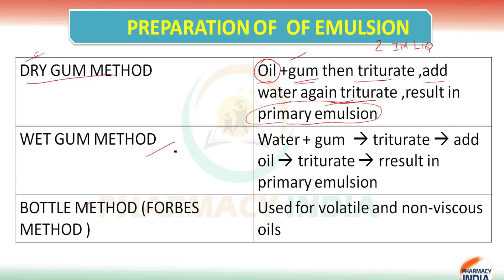The next one is the wet gum method. In the wet gum method, as the name denotes, water comes first. First, water plus gum is triturated, then oil is added and triturated again. This also results in the formation of a primary emulsion.